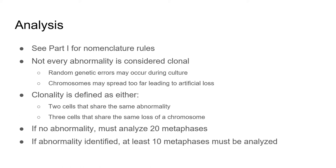First, more than one cell must have the same abnormality to call it clonal. Second, if there is a loss of a chromosome, at least three cells must share the same loss to call it an abnormality. If no abnormalities can be identified, a minimum of 20 metaphases must be fully analyzed; if there is an abnormality, at least 10 metaphases must be analyzed.